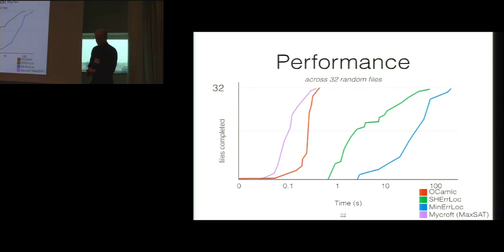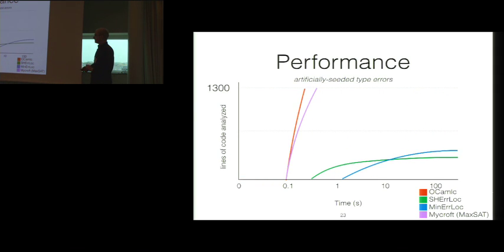You might also wonder how large are these files that are causing these tools to spin out? They're very small. None of these have more than 100 lines of code in them. They're student assignments. They're pretty small. But this is actually pretty unrealistic. So in the real world, programs can be a lot bigger. So we have this experiment where we introduced artificial type errors in programs of increasing size. And as you can see, at about 400 lines of code, these previous approaches spin out and can't do anything, whereas we stay competitive with the existing OCaml compiler, even up to 1,300 lines of code.